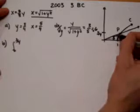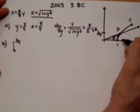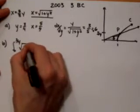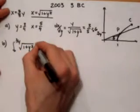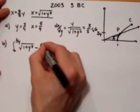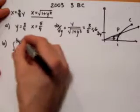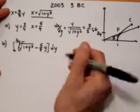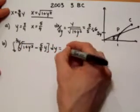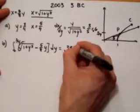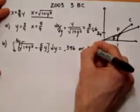And this function is the higher one, it's on top C, so we're going to do root 1 plus y squared minus the function below 5/3 y, dy. Plug that into your calculator, you should get 0.346 or 0.347.